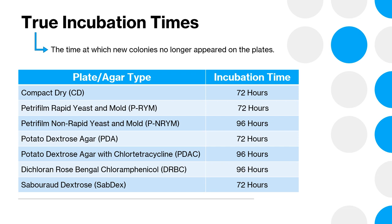The table on this slide lists out those true incubation times. The minimum acceptable incubation time we saw for total yeast and mold was 72 hours, and the maximum was 96 hours. By looking at cannabis flower specifically, the laboratory was able to determine how much the matrix impacted the speed at which those colonies grew. Four plates — compact dry, Petri film rapid yeast and mold, PDA, and Sabdex — needed 72-hour incubation. However, three plates needed 96 hours: the Petri film non-rapid yeast and mold, PDAC, and DRBC plates.